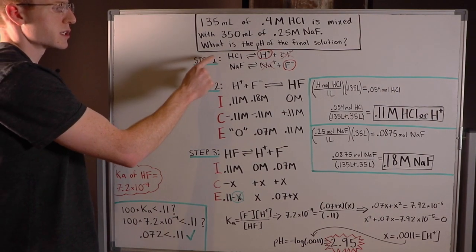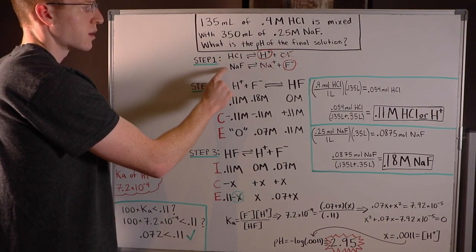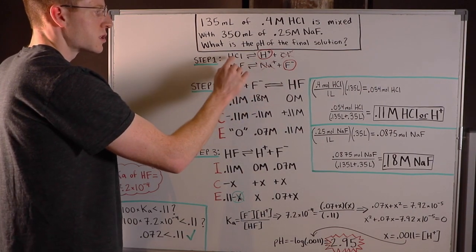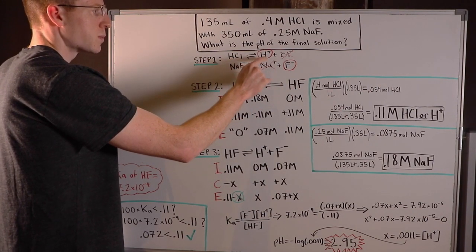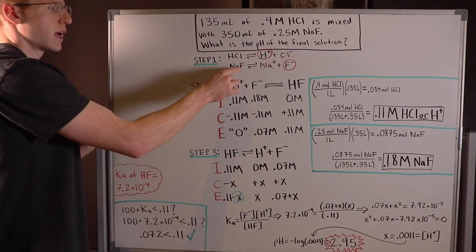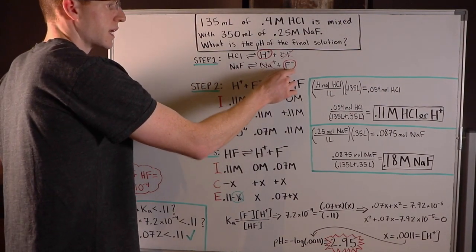The first step is to dissociate your initial compounds into their ions. So HCl is going to split up into H plus and Cl minus, while NaF is going to split up into Na plus and F minus.